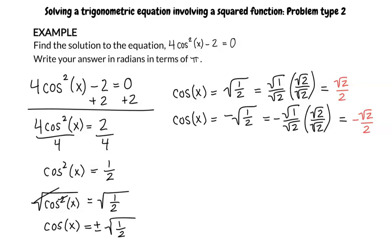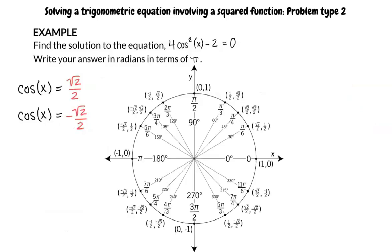Now we must look at the unit circle to determine what angles make the equation true. So we look for square root of 2 divided by 2 and negative square root of 2 divided by 2 in the x position of the coordinate points x, y on the unit circle.